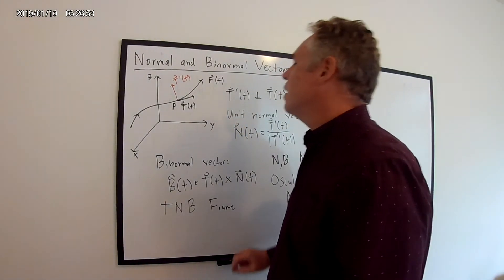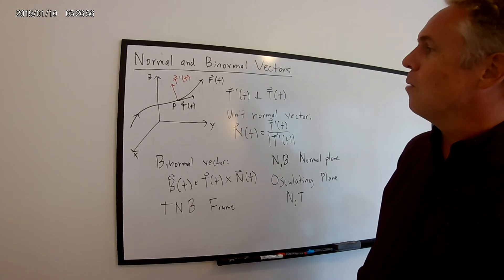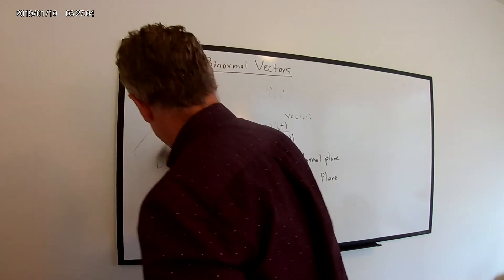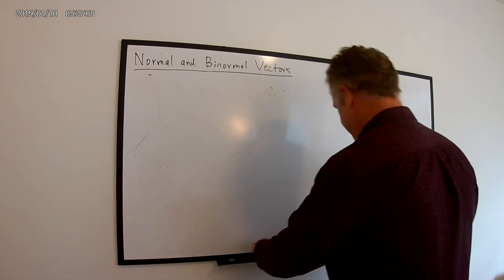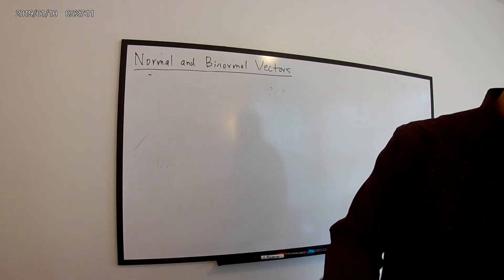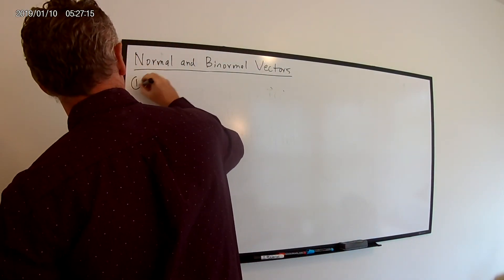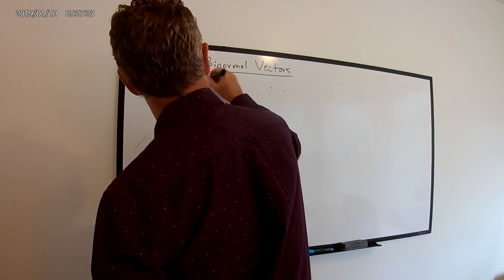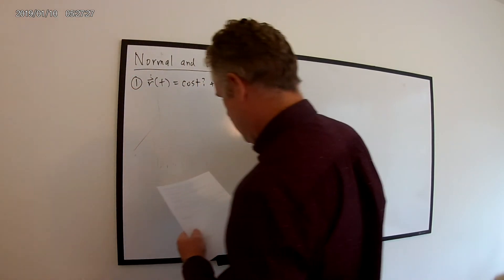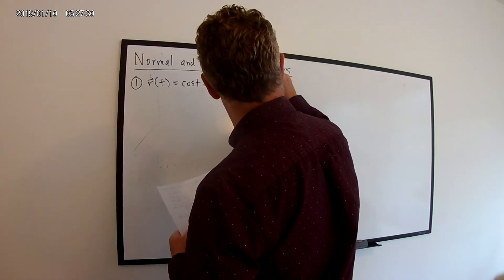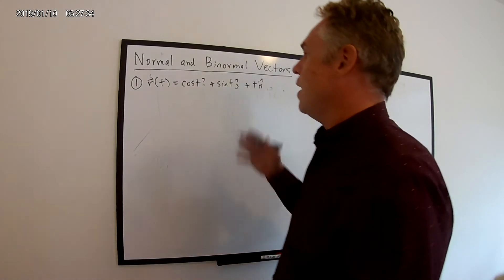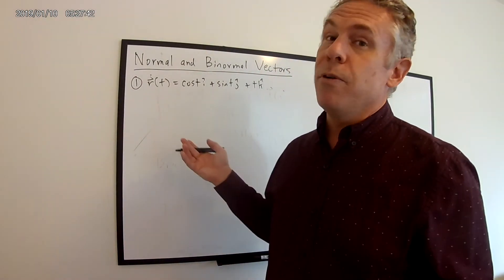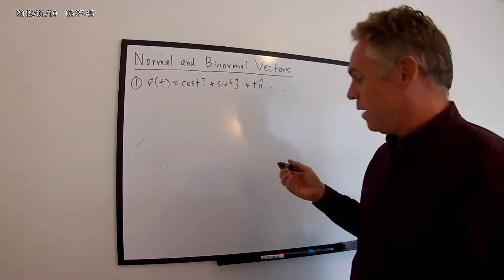What I do want to do is work through an example problem where we find the unit normal and binormal vectors for a given space curve. Let's imagine we have a space curve R(t) given by cosine(t) î + sine(t) ĵ + t k̂. This is our standard helix. We're going to find the unit normal and binormal vectors. To do this, we first need to find the unit tangent vector, which requires taking some derivatives.